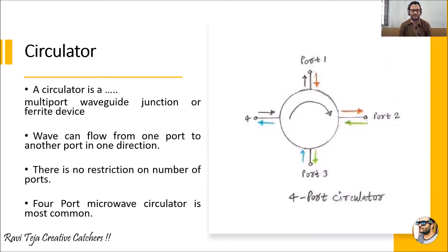In today's class we are going to learn about the circulator. We have seen several ferrite devices already, and this is one of the new kinds. It is the most popular ferrite device, also called a multi-port waveguide junction, which is widely used in microwave engineering. A circulator is a multi-port waveguide junction or a ferrite device.